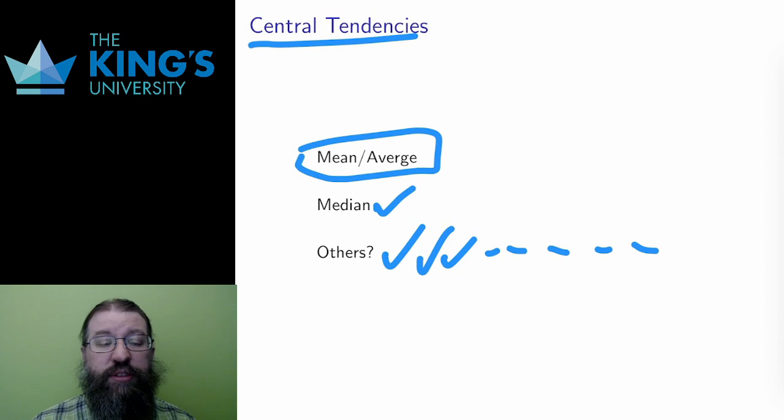Average is a central tendency. Median is a central tendency. These are something that mathematically gives some idea of what is typical in a probability distribution.